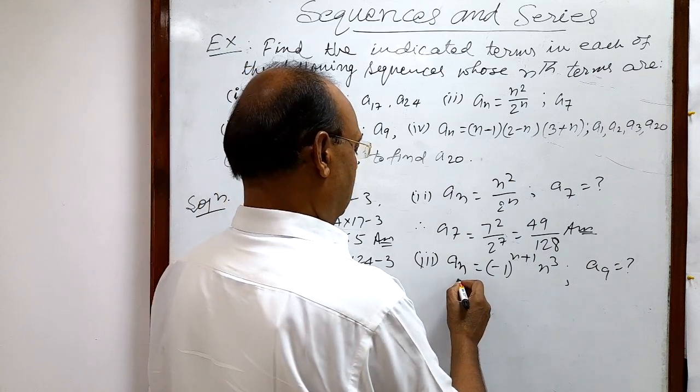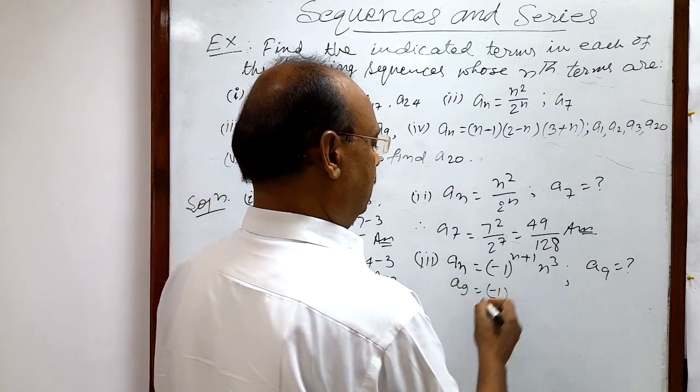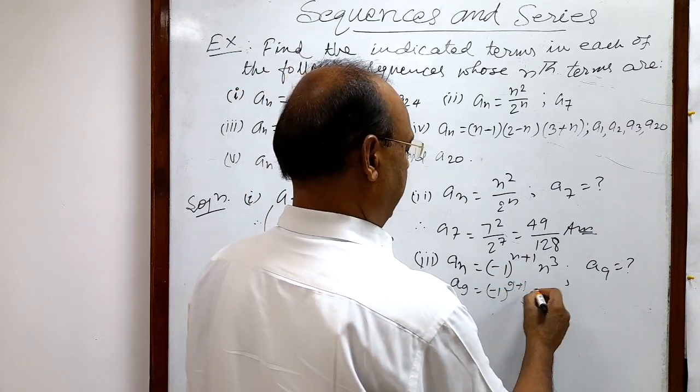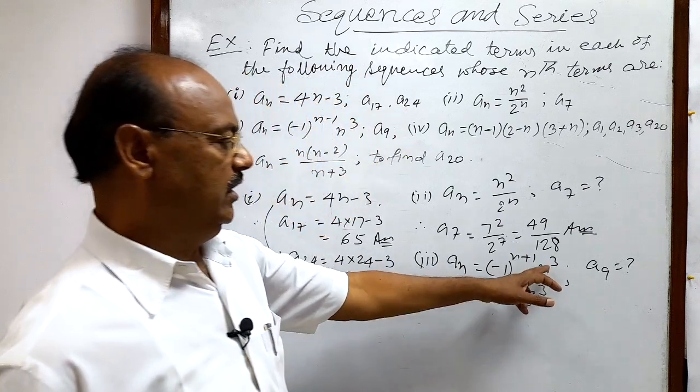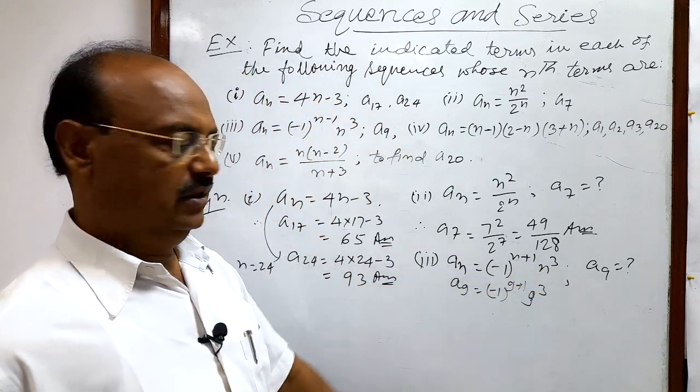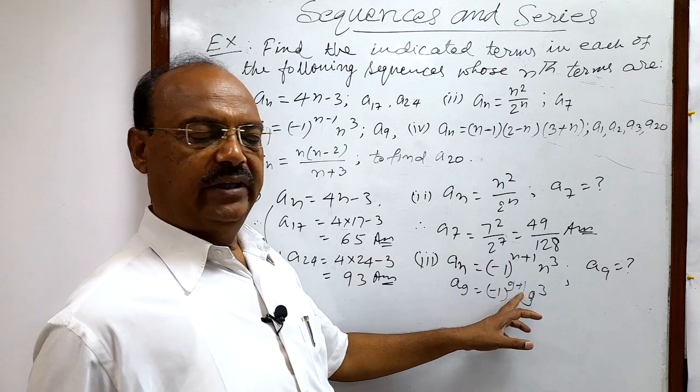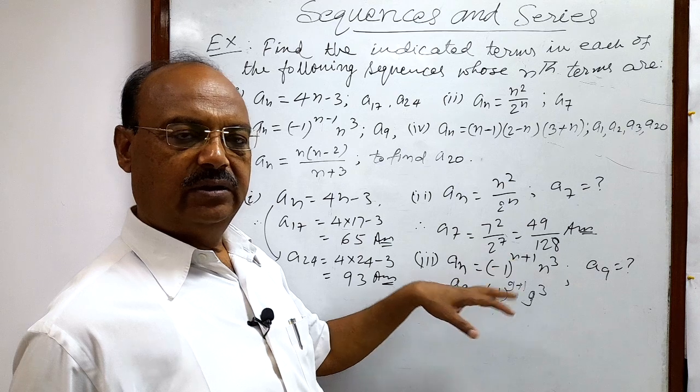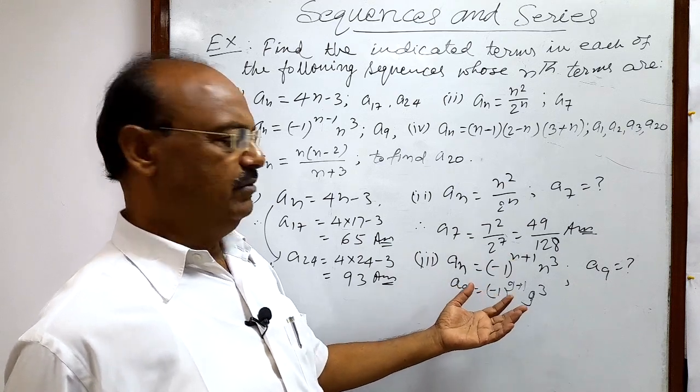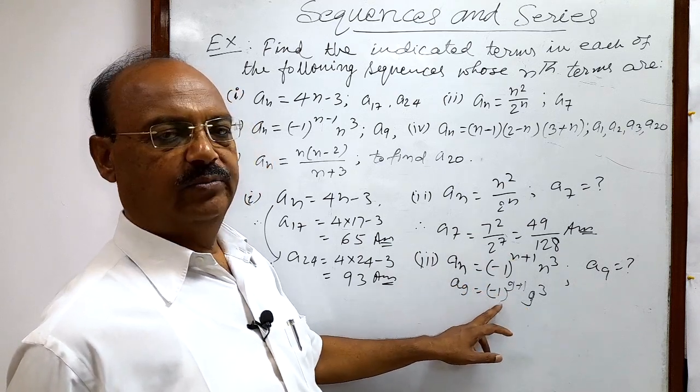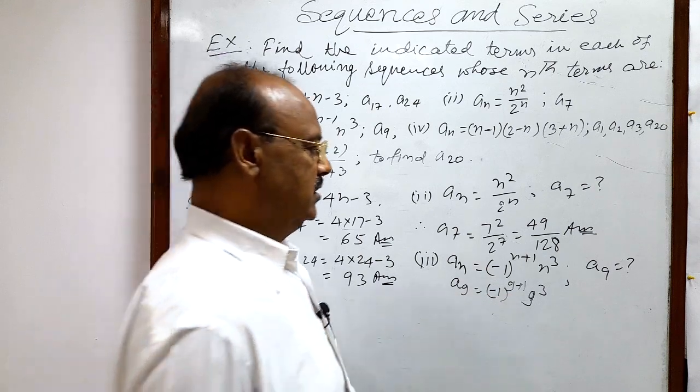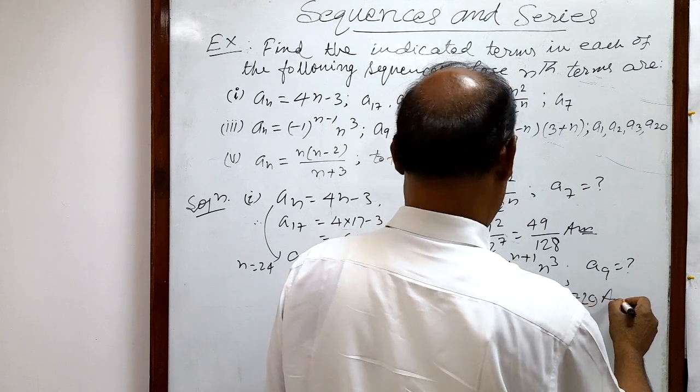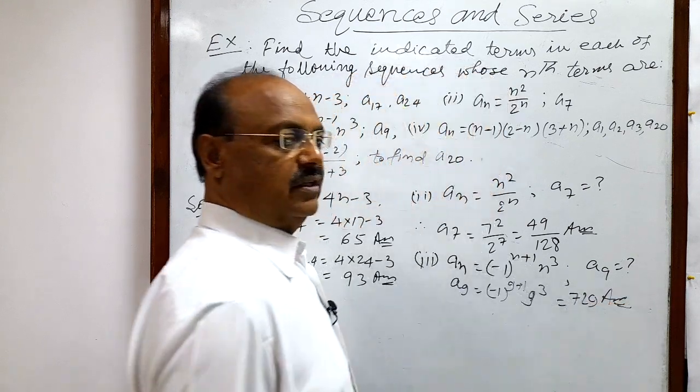So a9 is equal to minus 1 to the power 9 plus 1, means 10, and here 9 whole cube. We are putting n is equal to 9 here. So minus 1 to the power 10 - minus 1 to the even power, 10 is even power. So it becomes plus 1, positive number, and 9 cube. And 9 cube this will be equal to 729. This is the answer.